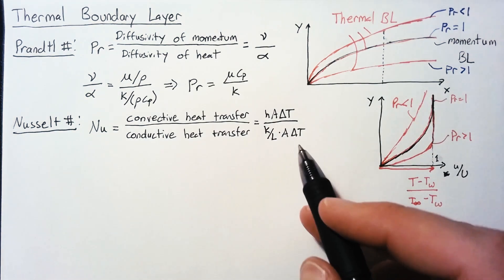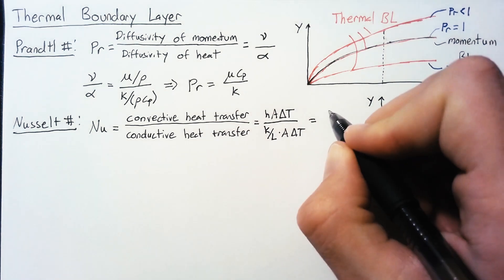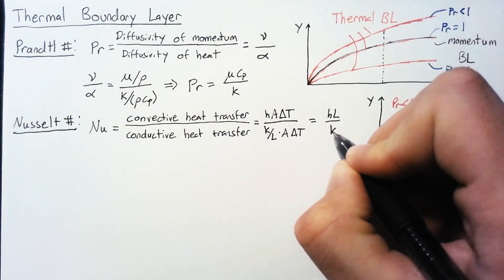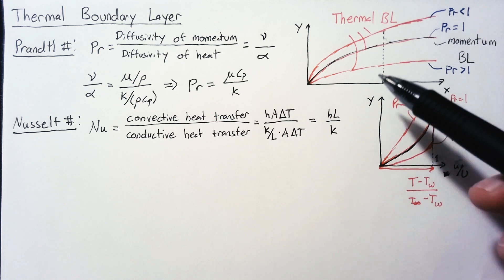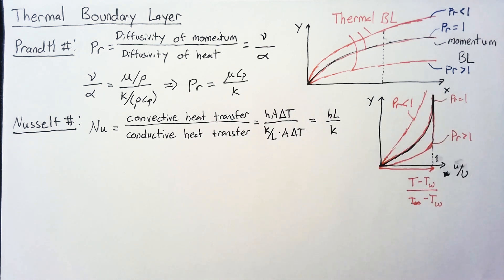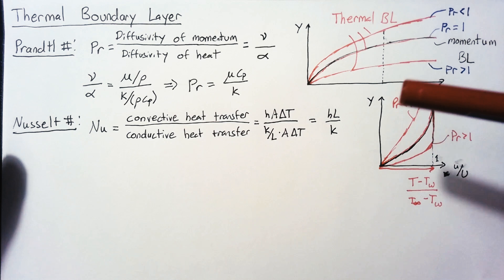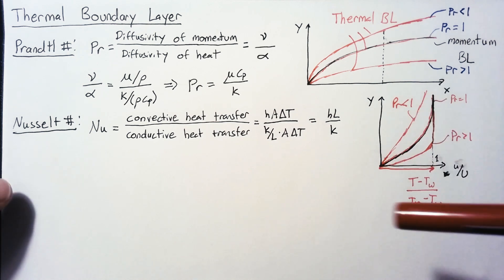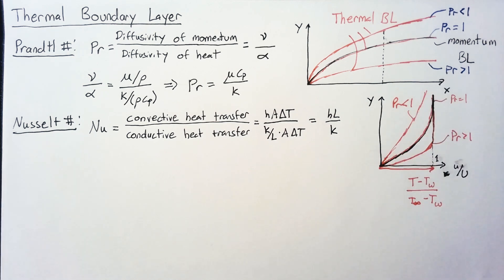The conductive heat transfer we can write as K over L times A delta T. Most of this just cancels out, and we end up with H times L over K. Normally whenever you see the Nusselt number written, all you really see is this HL over K. Let's talk about the actual heat flux from the thermal boundary layer, and then from there, we can look into what the Nusselt number would be for a flat plate.